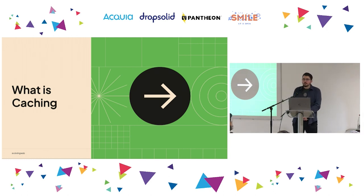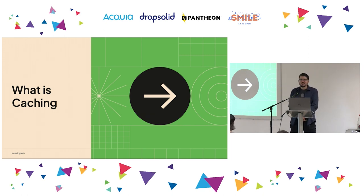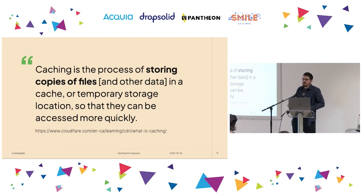Essentially, what is caching? It's literally storing a copy of the result of a computation so that you don't need to redo that computation again. Think about the multiplication table you learned in your youth — you're not having to recompute those small multiplications, you just know them by heart. You're basically going to store a file or a piece of data in storage so that if the same request needs to be executed again, you're going to be able to serve the result right away without having to recompute it.